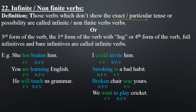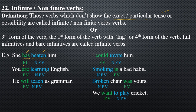Those verbs which don't show the exact or particular tense — for example, 'she [has] beaten him.' If we only use the non-finite verb 'beaten,' we won't be able to tell which tense it is. The finite verb, shown in green, tells you the tense: 'has' means present perfect, 'had' means past perfect, 'will have' means future perfect. So finite verbs tell us the exact tense; non-finite verbs do not.